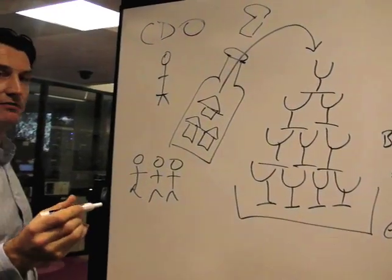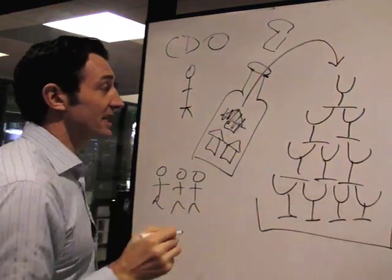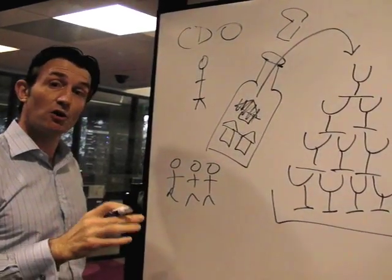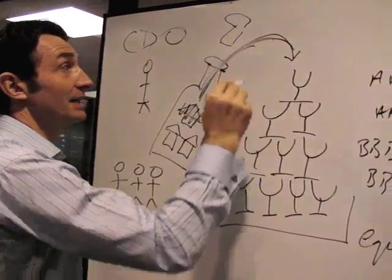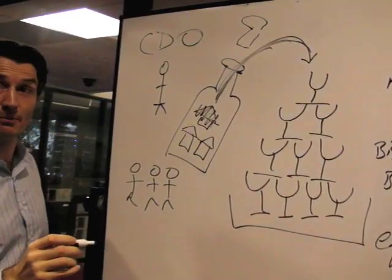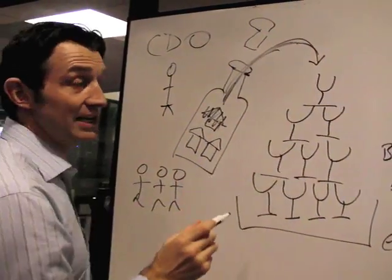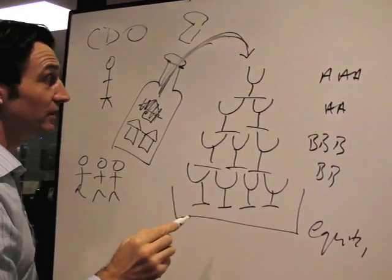But what happens when, say, one of these mortgages or say 30% of these mortgages or mortgage holders stop paying their mortgage? Well, it means that there's a lot less interest being paid. Less bubbly coming out of the top of your champagne bottle. So it means that the first glass may get filled, hence the least risk and the lowest payment.